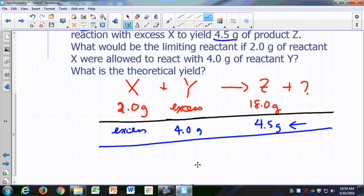So what happens now if you were trying to react 2 grams of X and 4 grams of Y? How much Z would you get? Is it going to be 4.5 or 18 grams? Well, let's imagine this reaction happening. Let's imagine we got 4.5 grams. What does that mean?